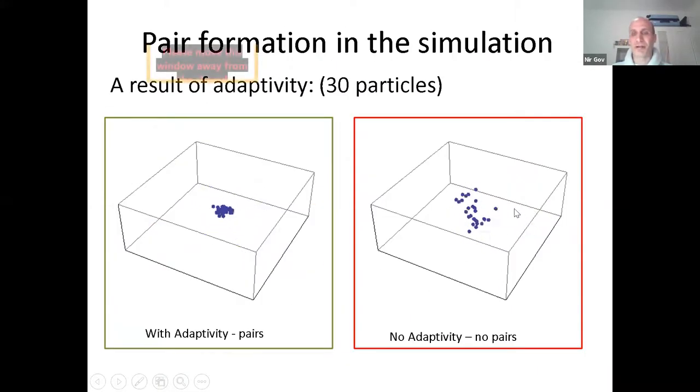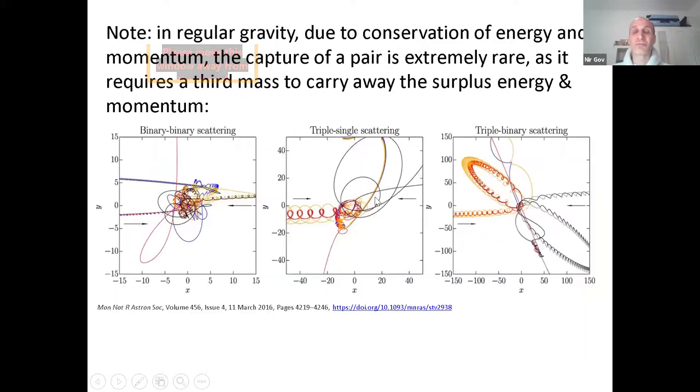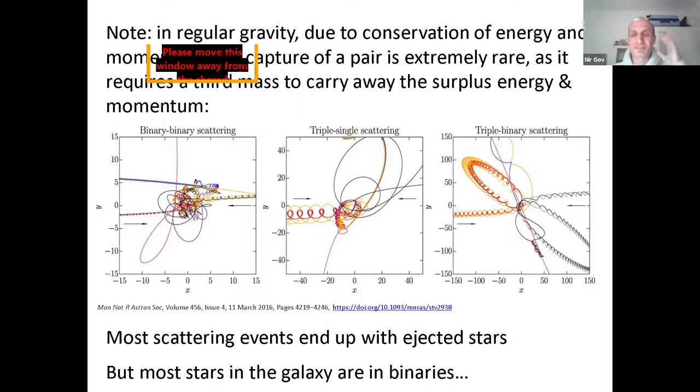So I'll quickly show you maybe this movie. So this is a simulation with regular gravity. And I don't think you see any pairing. And this is a simulation with adaptive gravity. And I think you can really see very quickly with the eye that they do form these long-lived pairs, which can actually traverse the whole cloud several times without breaking up, even triplets sometimes. And that's already striking. And I can just tell you that with regular gravity, it's very difficult for two masses to catch each other. Because of conservation of energy and momentum, you need a third mass to take away the surplus energy and momentum in order to make them bound into a pair. And that almost never happens.